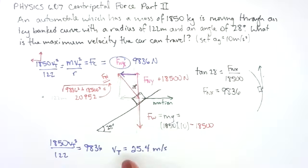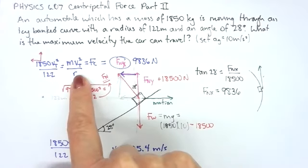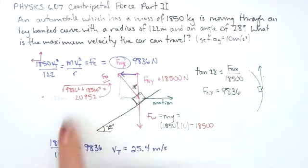Using our angle and trig and knowing what the weight vector is, we can bust this out, and we can solve for this, which I can then set equal to my formula for centripetal force. And when I solve, I find that if I want to stay on this curve when it's perfectly icy, if I can keep my velocity at 25.4 meters per second, I won't slide up or down if I can keep that constant velocity.